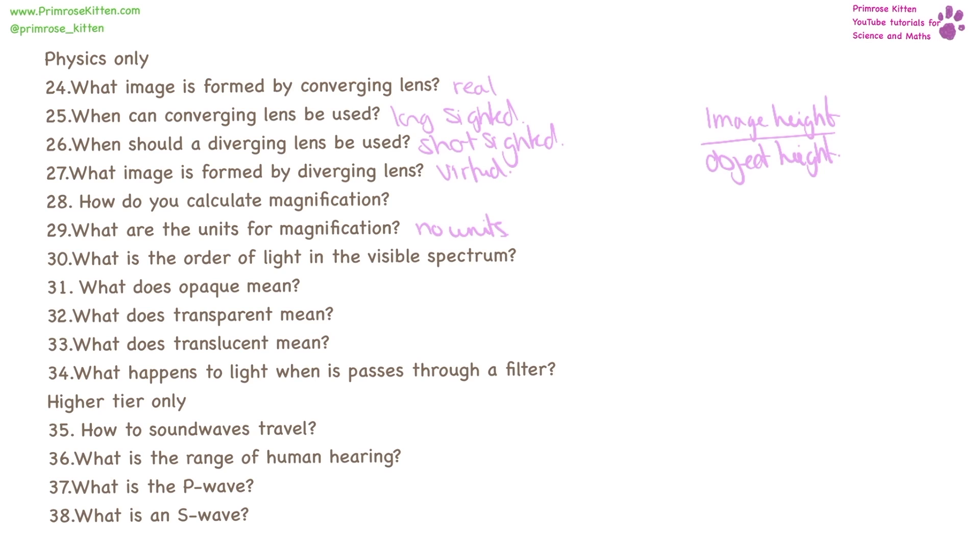Order of light in the visible spectrum is red, orange, green, blue, indigo, violet.